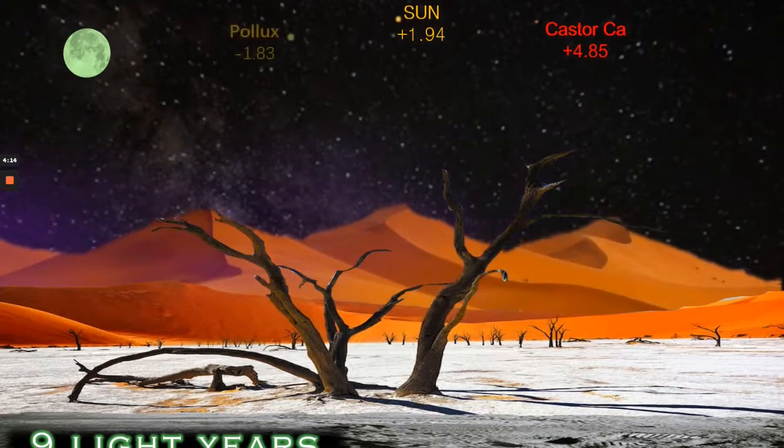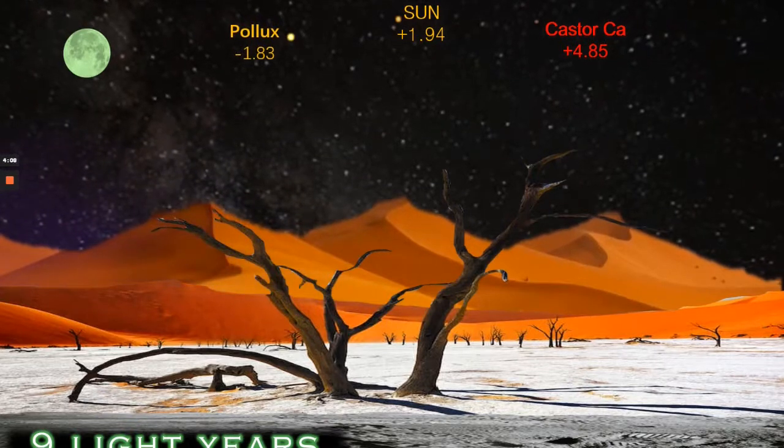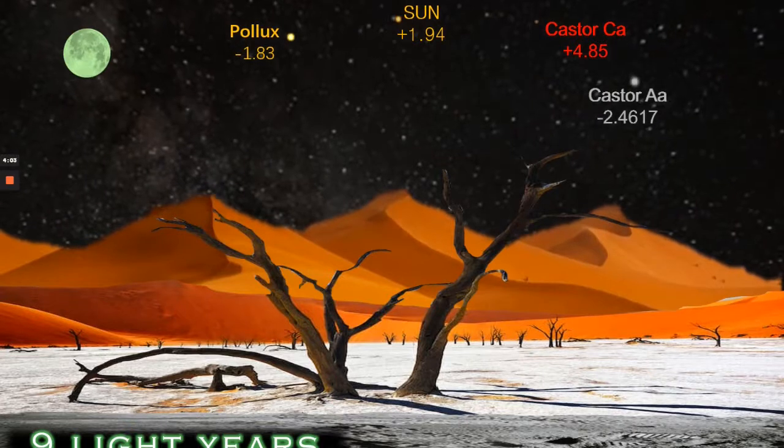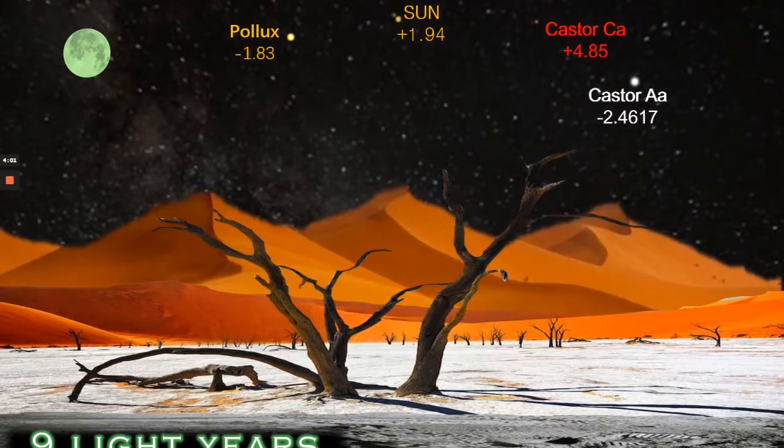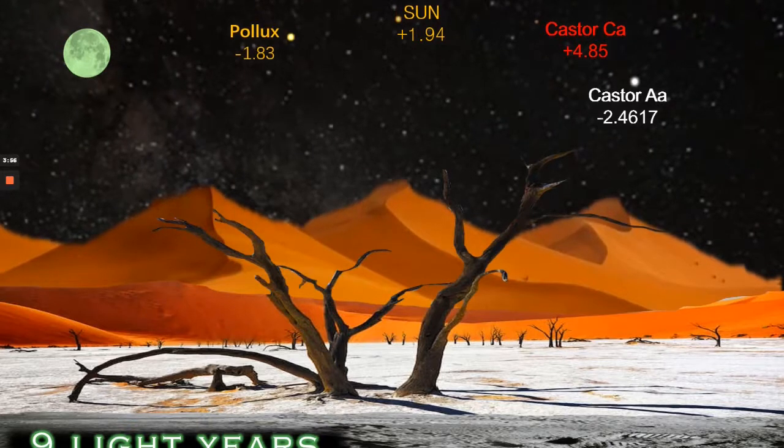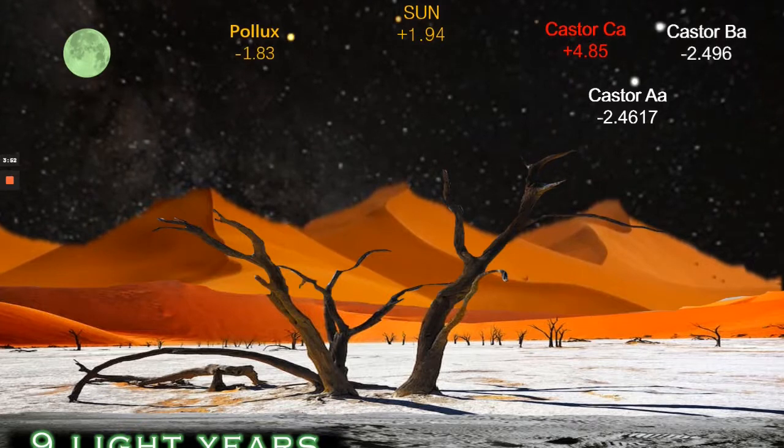Pollux at minus 1.83 is extremely bright and would be brighter than the star Sirius in our own skies. Castor AA at minus 2.46 and Castor AB at minus 2.49 are very similar in brightness and interestingly it's about the same brightness as Jupiter is from planet earth.